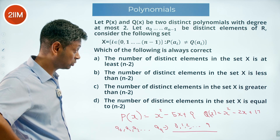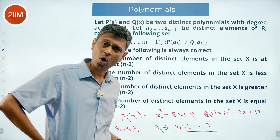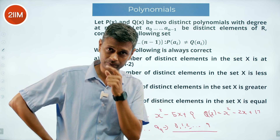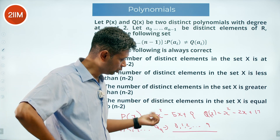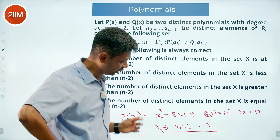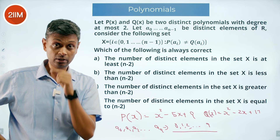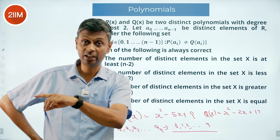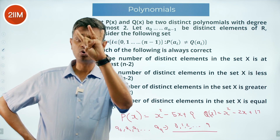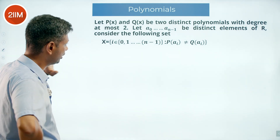But can I have a scenario where only 6 of the 10 work — say indices 0 through 5 satisfy P(aᵢ) ≠ Q(aᵢ), but P(a₆)=Q(a₆), P(a₇)=Q(a₇), P(a₈)=Q(a₈), P(a₉)=Q(a₉)? That would give fewer than n-2 = 8. So the key question is: can P(x) = Q(x) for 4 or more distinct values of x? This unlocks everything.